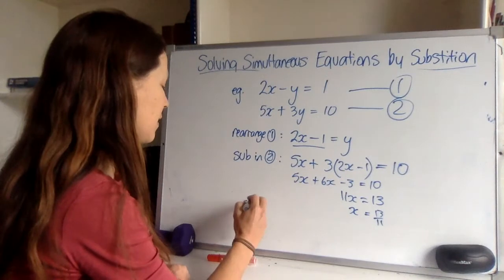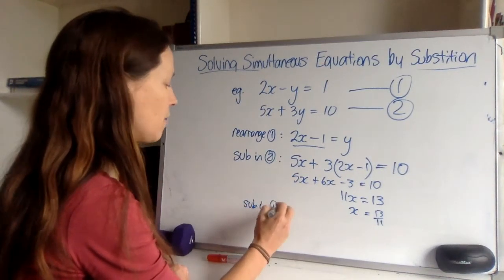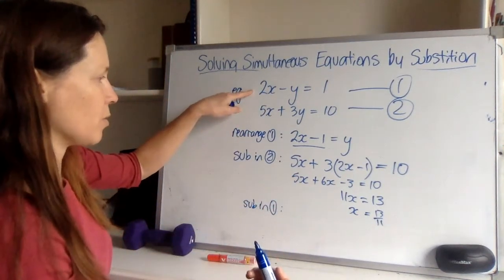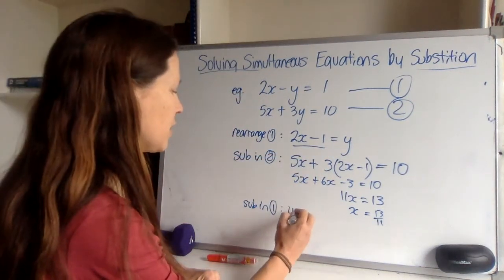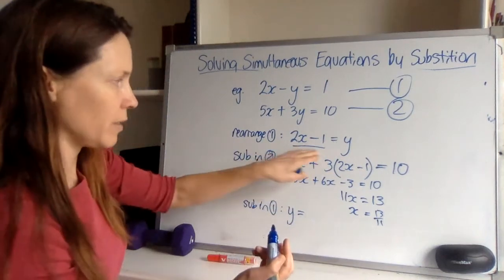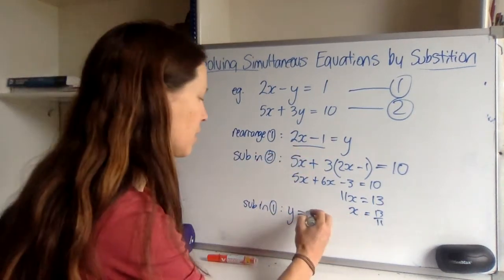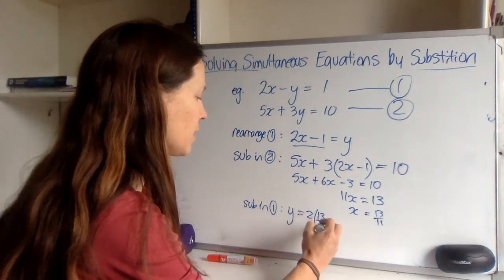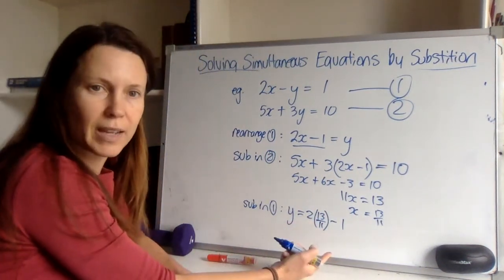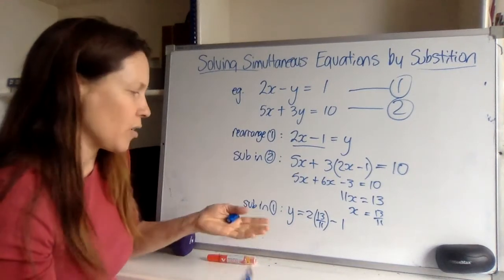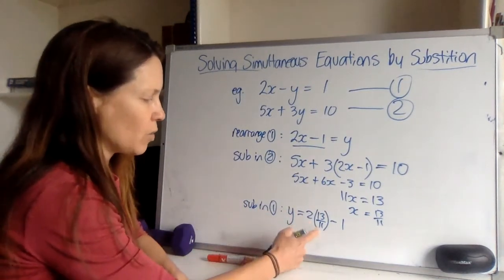And now I can sub that into either equation. I'm going to pick this version of the first one because it says y equals and it has a lovely little recipe there for y. It's going to be 2 lots of 13 elevenths minus 1. Now notice I didn't work out in my head what it was and write it down, because if I made a mistake, I'll get no marks for that. Whereas if I write down what I'm doing, and then I actually make an incorrect calculation here, I'll get some sort of mark perhaps because I was trying to multiply my number by 2 and then take 1 off it, and that is the correct procedure.